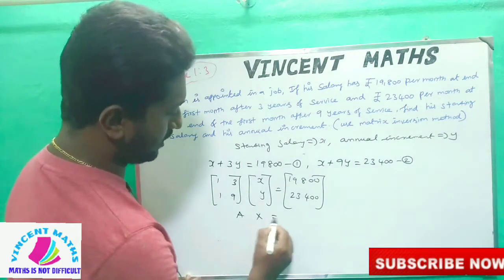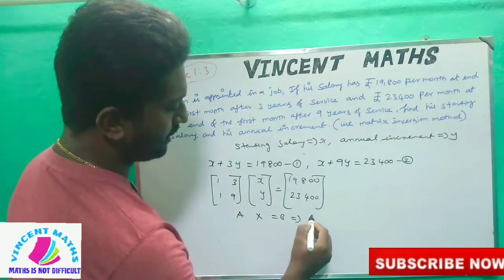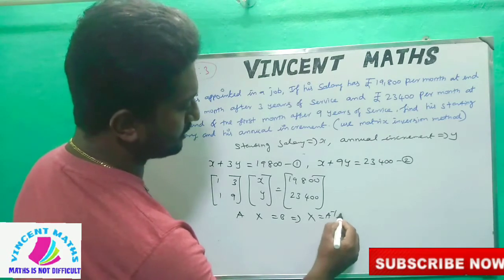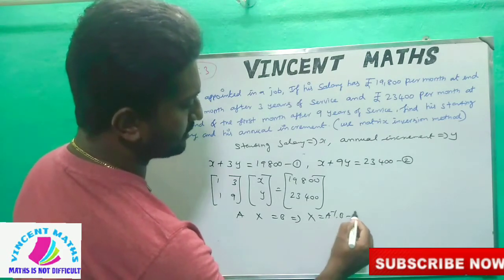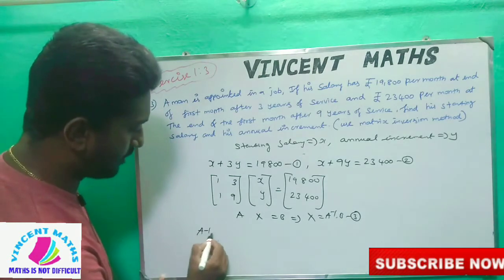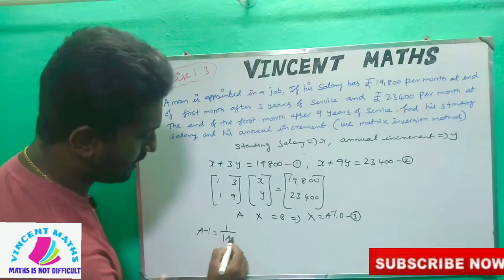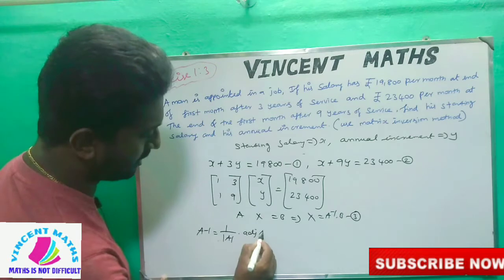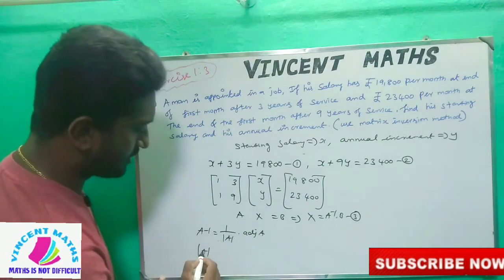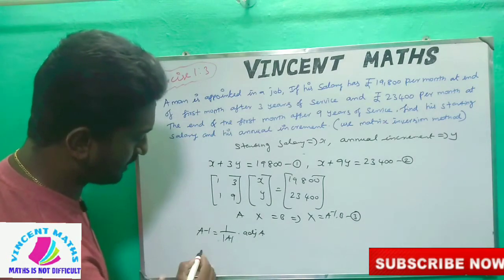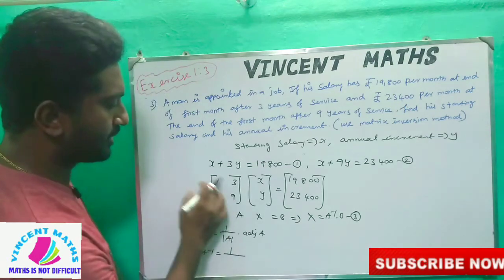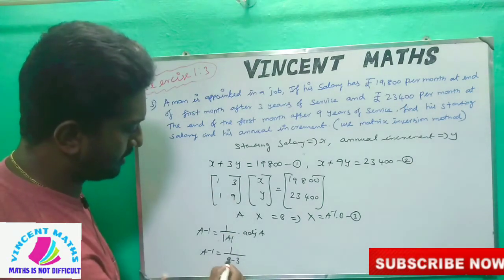We use the formula AX = B, so X equals A-inverse times B. Now, A-inverse equals 1 over the determinant of A times the adjoint of A. The determinant of A gives us 9 minus 3.